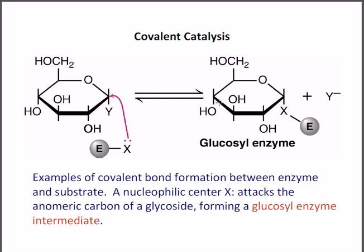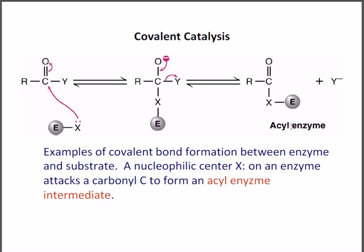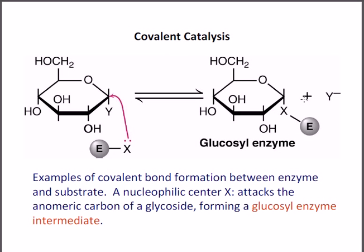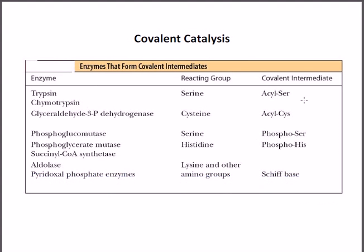Similarly, if glucose in cyclized form undergoes nucleophilic attack and attaches to the enzyme's X group while the Y portion is released, this is called the glucosyl enzyme intermediate. These intermediates — glucosyl enzyme, acyl enzyme, or phosphoryl enzyme — are all intermediates, not final products. To produce the actual product from these intermediates, we need the presence of water and a hydrolysis step.